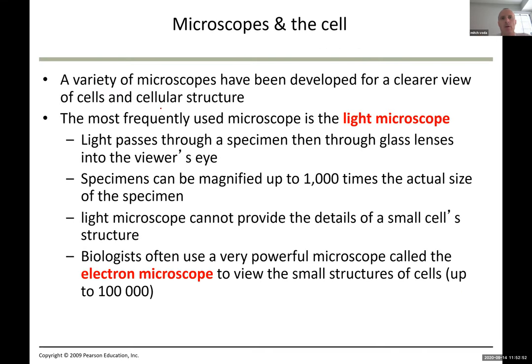When these early scientists looked at cells, they could not see them with the naked eye because cells are very, very small. So they had to build some type of microscope.